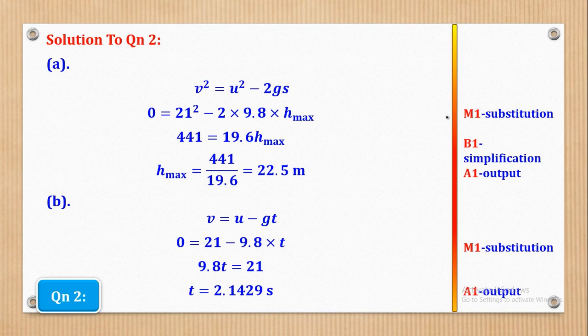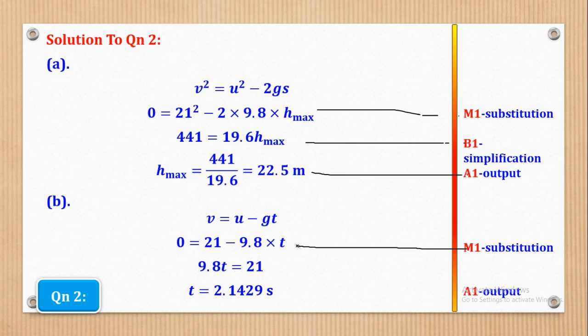For the mark scheme: M1 is for substituting in the third equation, B1 is for simplifying, and A1 is for the maximum height. For part B, M1 is for substituting in the first equation and A1 is for the time. That is how the 5 marks come about in question 2.